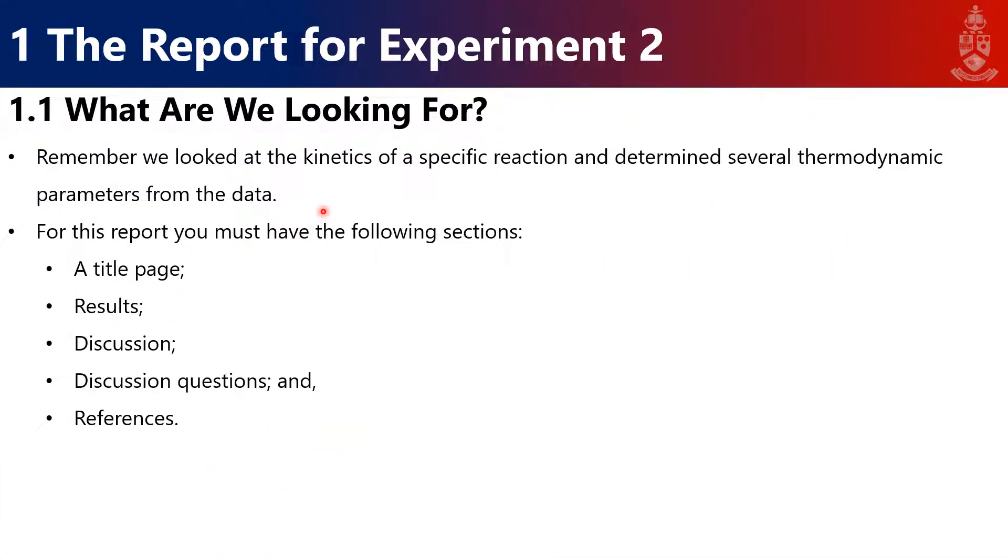As well as answering some of the questions and helping you work through the data analysis. So, what are we looking for exactly in Experiment 2? Let's recall what we looked at. We looked at the kinetics for a specific reaction and then we want to determine the thermodynamic parameters like the entropy, the enthalpy, the Gibbs free energy from the data that we collected. We require you to write a title, give the results section, a discussion section, answer some discussion questions, and give references for this specific report.